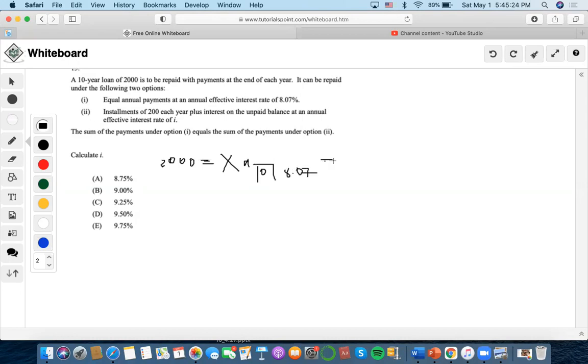Now let's solve for X. So we'll have $2,000, negative $2,000 as the present value, 10 number of years, 8.07 as interest rate, zero as future value, compute payment. So X would equal $299, right?